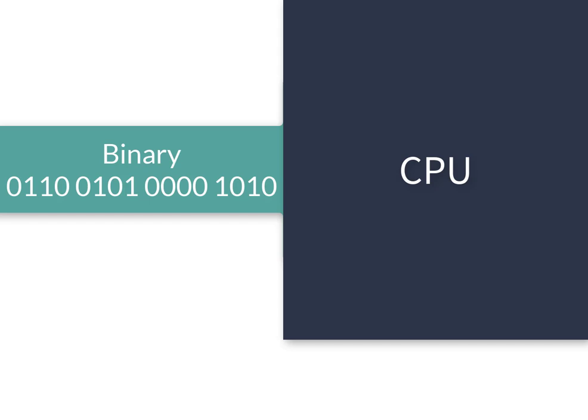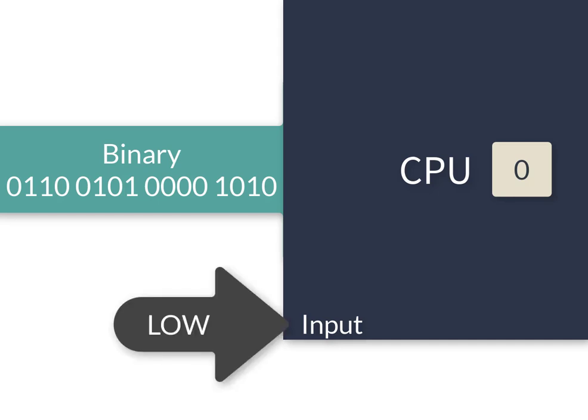In order to provide a zero to the computer, we would provide a low input, close to zero voltage. If we wanted to produce a one, we would provide a high input. In a 5 volt system, somewhere around 5 or 4 volts would be considered a high input that would be interpreted as a one. We have a series of highs and lows that are interpreted as zero or one.